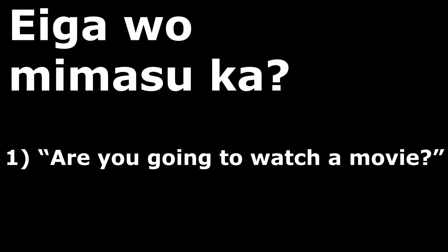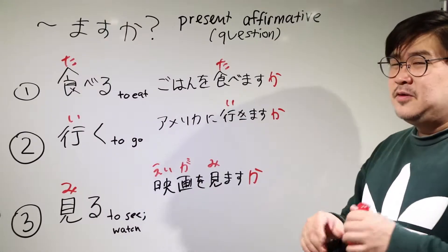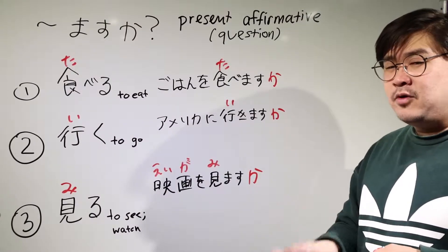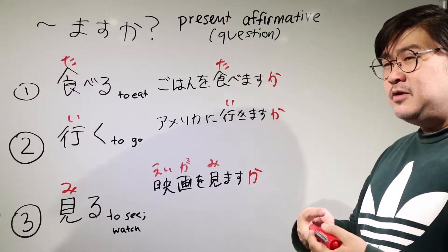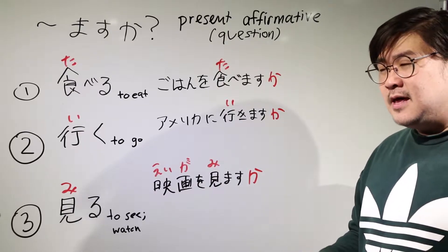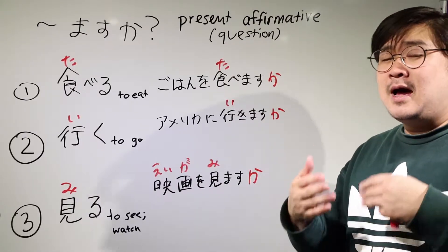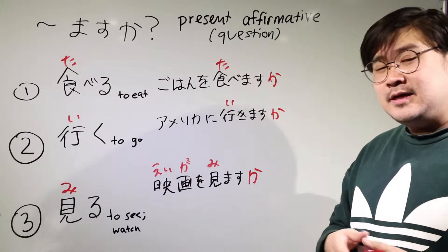The last one, eiga wo mimasu ka - are you watching a movie, are you going to watch a movie, or do you watch movies as in a hobby. So those two distinctions are very important. When you listen to it, you have to kind of know what the context is in order to think, are they asking me about a habit or are they asking me about something I'm going to do. And that's it.